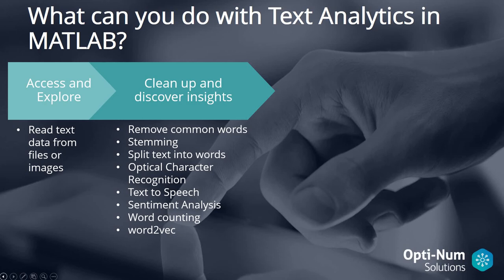We want to be able to split our text into different words with the spaces in between. Maybe we want to do some optical character recognition if our text is contained within an image. We can perform text to speech, perform sentiment analysis, count the words within sentences or in our text file, or use an algorithm called word2vec. This algorithm allows analysis of a word in context by mapping related words closer to each other in a vector space, so words like boat, harbour and ocean would be more closely related to each other than to the word field.